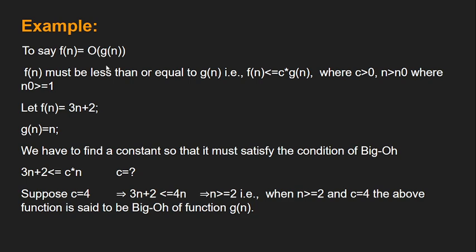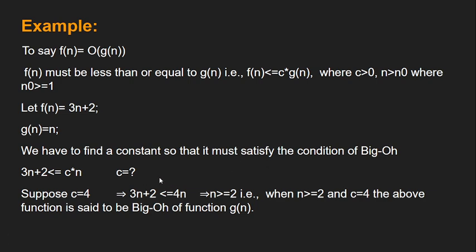To say f(n) = O(g(n)) means f(n) must be less than or equal to c·g(n), and the condition is satisfied. Here c is a positive constant greater than 0, and n₀ is the input size where n₀ ≥ 1 — at least greater than 1 is compulsory. Let f(n) = 3n + 2 and g(n) = n. We have to find a constant c such that it satisfies the condition of Big O.